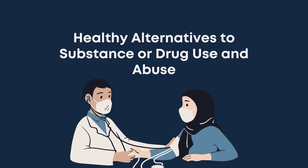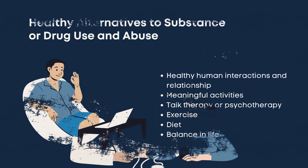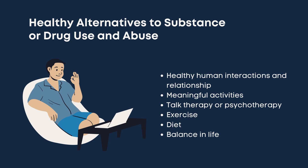Healthy alternatives to substance or drug use and abuse. Here is the list of healthy alternatives. First is healthy human interaction and relationships. It is very important to have good friends, family, classmates, teachers — people who can help improve you rather than lead you astray. We need to find people who will bring us toward good things. Second is meaningful activities. We can engage in sports, civic activities, musical activities, art activities — things that are more meaningful, where we learn more and can help others.